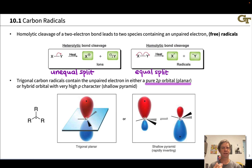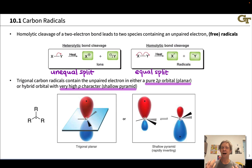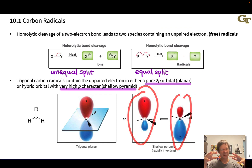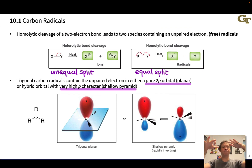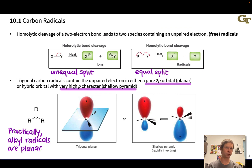In some cases, the evidence suggests that carbon radicals are more like shallow pyramids, with very high p character in the orbital housing the unpaired electron, but a little pyramidalization. However, it rapidly flips back and forth between the two pyramidal forms, so that on average the radical looks planar. In a practical sense, these trigonal carbon radicals should really be thought of as trigonal planar, such that the unpaired electron is in a p orbital.